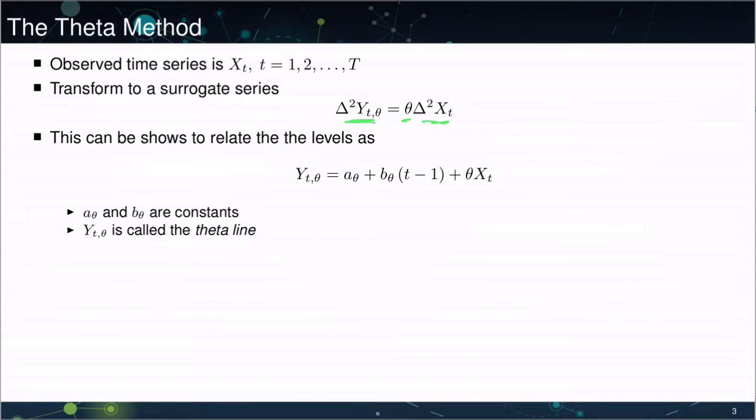So in other words, you double difference the data, you then scale it by some number theta, and then you think about building a model using these alternative versions of X that will look like the original data as close as possible.